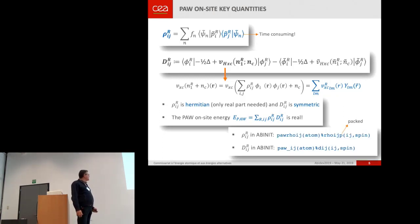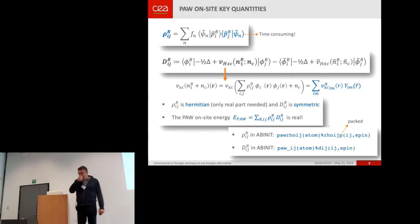So at start, we decided to store these quantities like this. We have two data structures, one per atom. And inside this data structure, we have the values, one per spin, and one per IJ couple. And this term is packed, but it's only a detail.